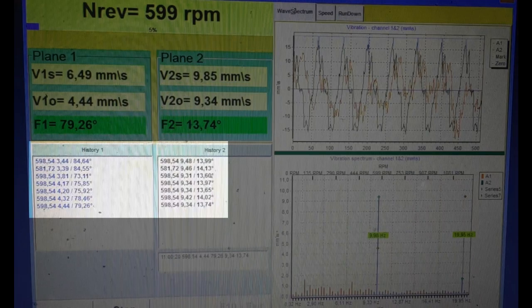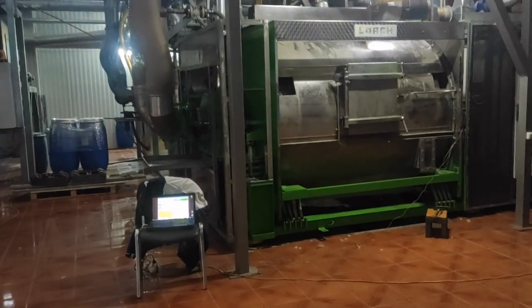You should also pay attention to the stability of readings in the vibrometer mode. During normal operation of the mechanism, the values of vibration amplitude and phase should not change by more than 10-15% during measurement. Now let's start balancing the centrifuge.